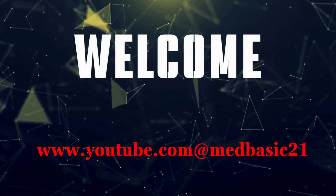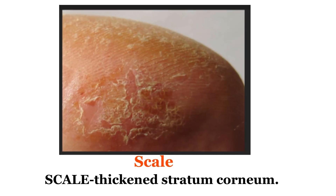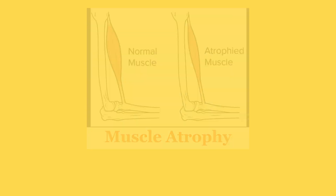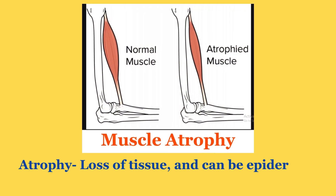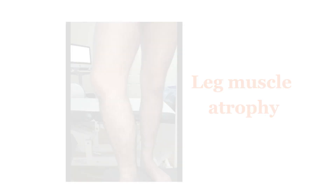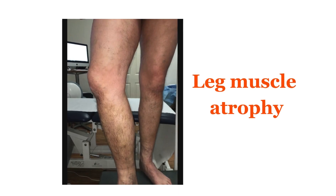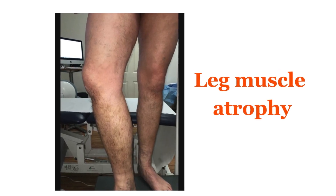Scale: thickened stratum corneum. Atrophy: loss of tissue, and can be epidermal, dermal or subcutaneous.